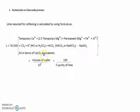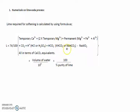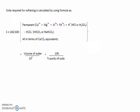We multiply this factor by the calcium carbonate equivalents of: temporary calcium salts, plus 2 times temporary magnesium salts, plus permanent hardness producing salts, plus carbon dioxide, plus acids like HCl or H₂SO₄, plus salts like KHCO₃ or NaHCO₃, and subtract salts like NaAlO₂ (sodium aluminate), all multiplied by volume of water divided by 10⁶, times 100 divided by percentage purity of lime.